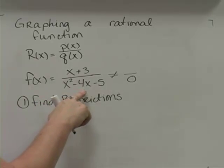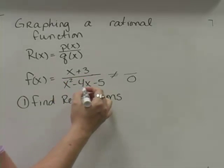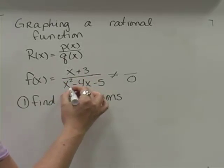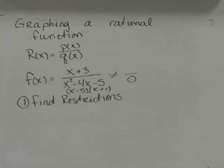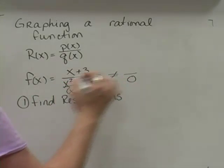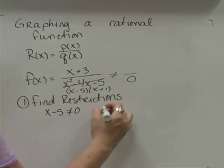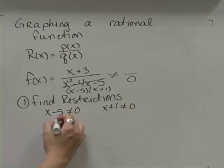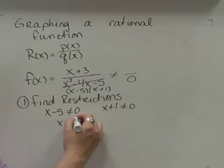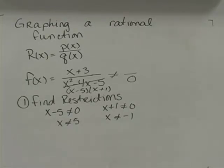To figure out what x cannot be, I've got to factor the denominator. It factors into x minus 5 times x plus 1. To find the restrictions, I'm going to take each one of these factors and set them so they can't be 0. So x minus 5 cannot be 0 and x plus 1 cannot be 0. Solving for x: x cannot be 5 and x cannot be negative 1. So I've found my restrictions.